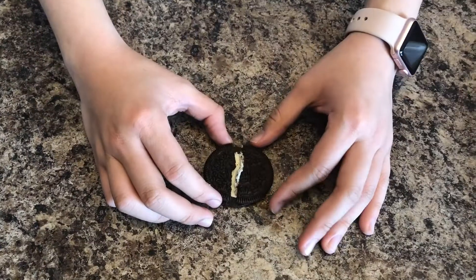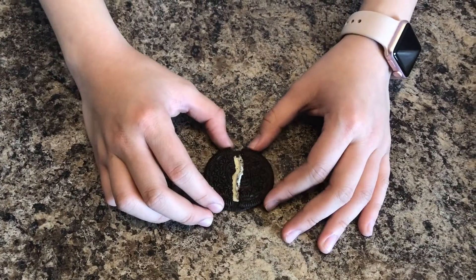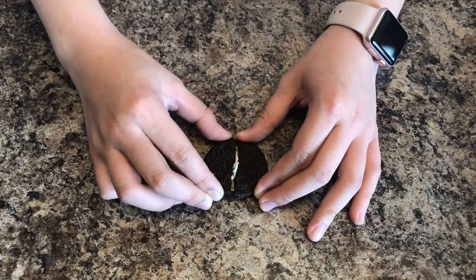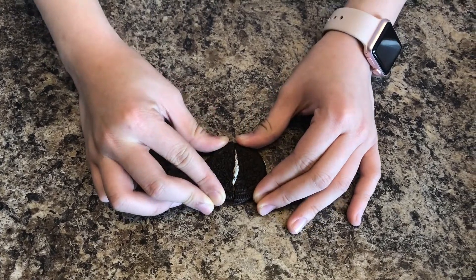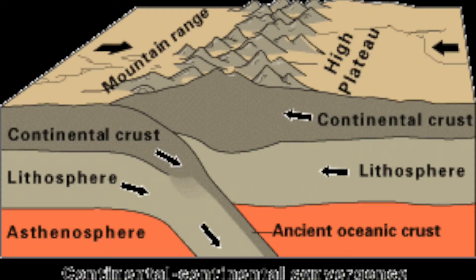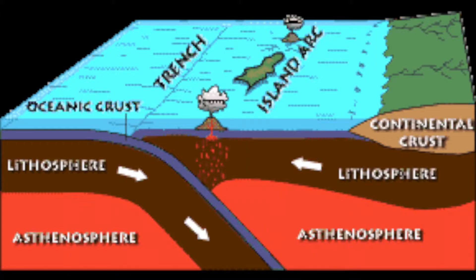Next, we have the convergent boundary, which is when one plate collides with another. There are three types: continental-oceanic, continental-continental, and oceanic-oceanic.